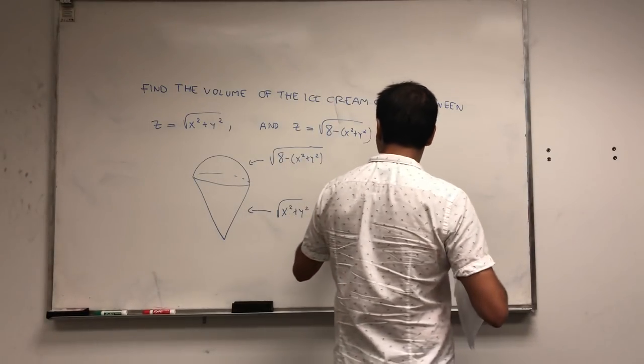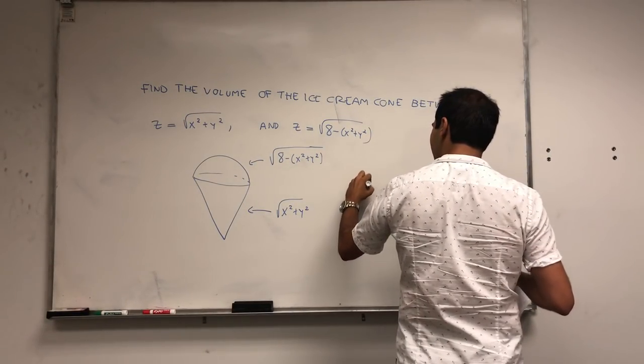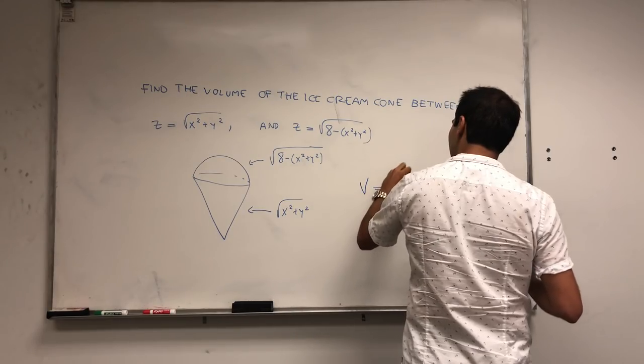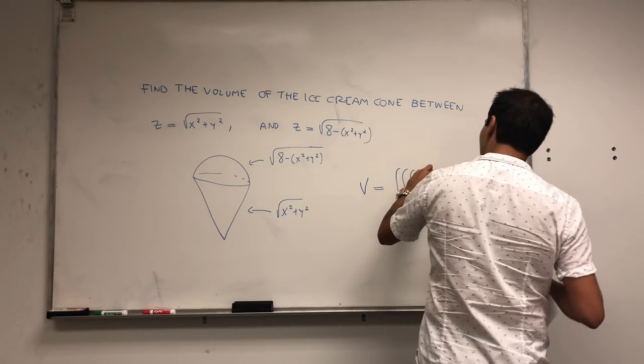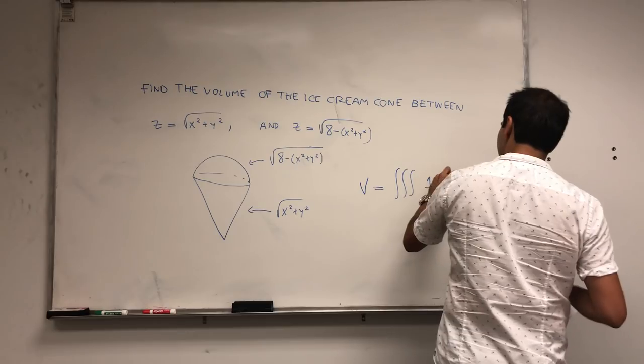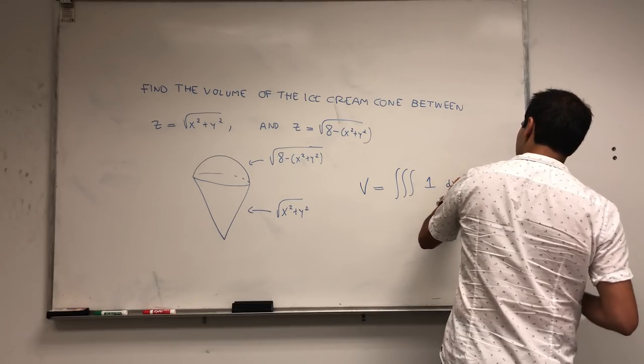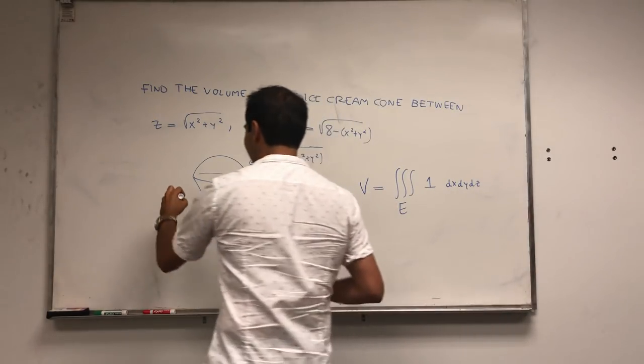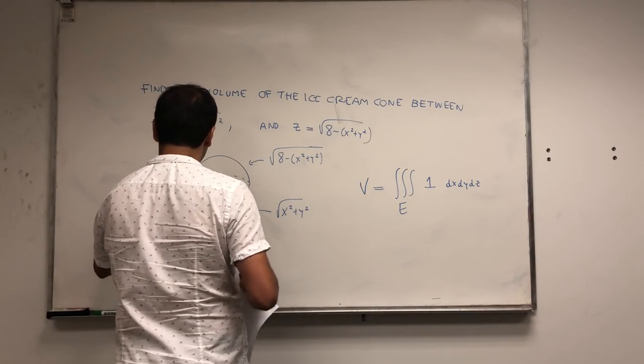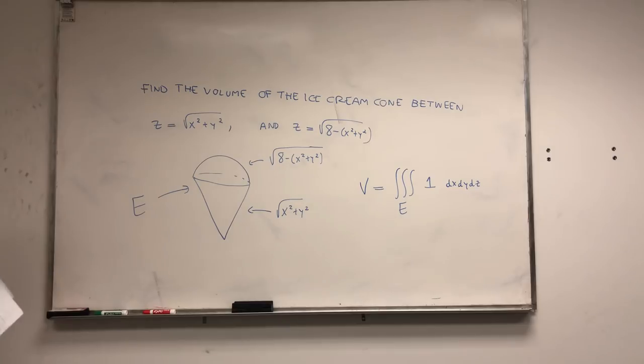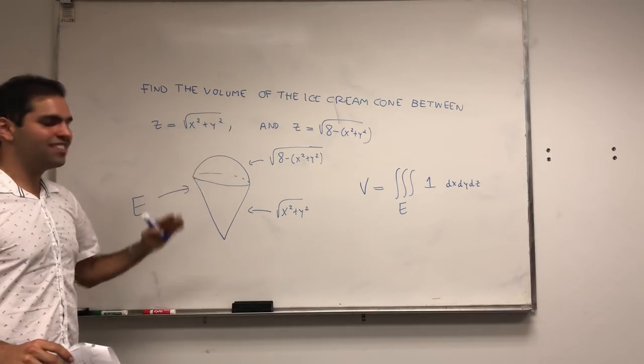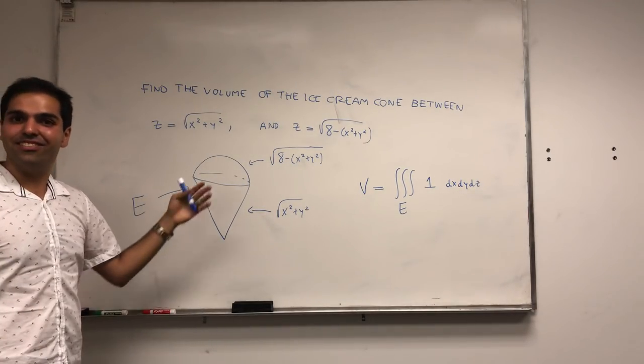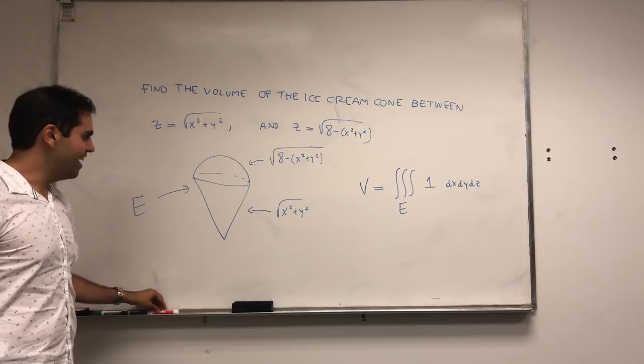In terms of triple integrals, we know that the volume is the triple integral of one dx dy dz in no particular order of the cone ice cream cone E, which is the whole solid region. And it turns out in terms of spherical coordinates this thing has a very nice, very easy expression.